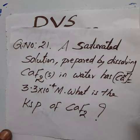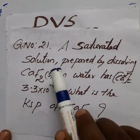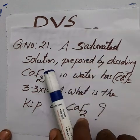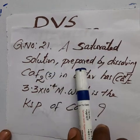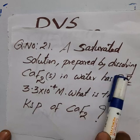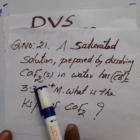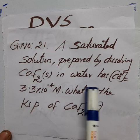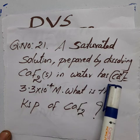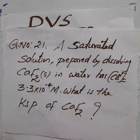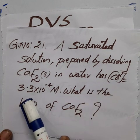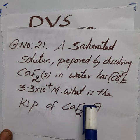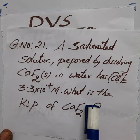A saturated solution prepared by dissolving calcium fluoride in water has a calcium ion concentration equal to 3.3 into 10 raised to minus 4 M. Question number 21: What is the Ksp of calcium fluoride?